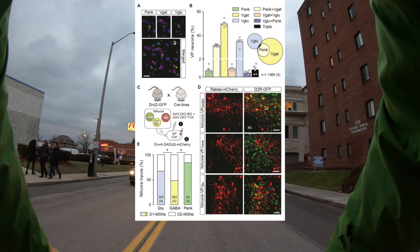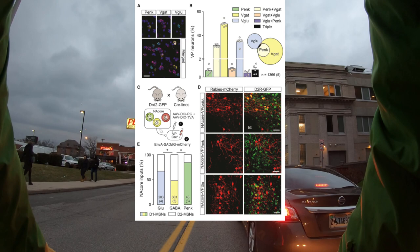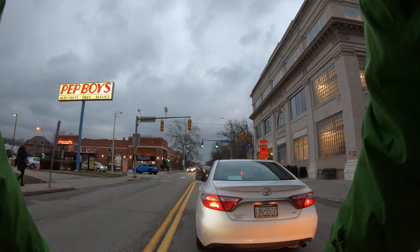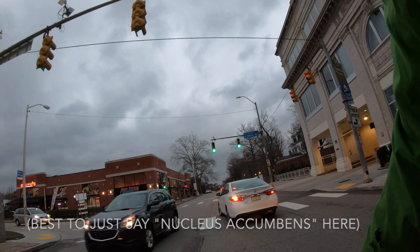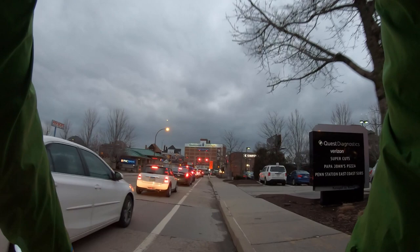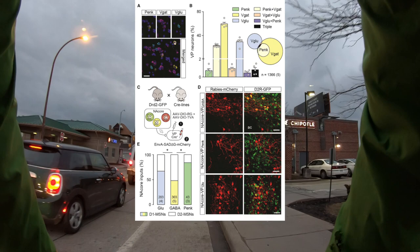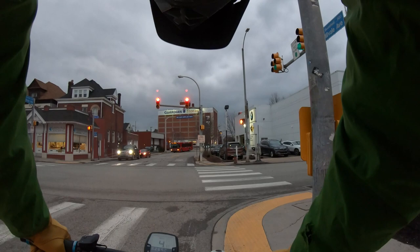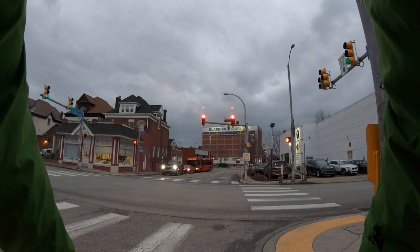The other thing in figure one, which is very impressive, is a rabies tracing experiment targeting these three cell types to show what input they receive from the nucleus accumbens and striatum. There are D1 and D2 receptor-expressing cell types in the nucleus accumbens and striatum, and they trace from D1 and D2 cells using rabies. Perhaps the best finding in this figure is that the proenkephalin subset of GABAergic cells seems to receive largely D1 input.